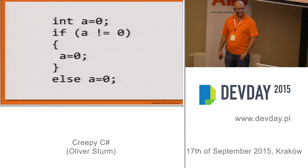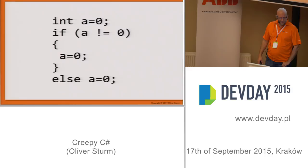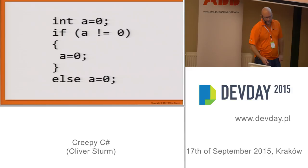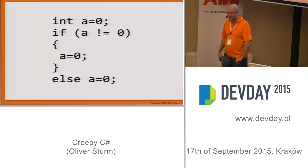Here's an example that defies expectations: we assign variable 'a' to zero, then if 'a' is not zero we set it to zero — otherwise we still set it to zero. So presumably after this code 'a' is zero. What the programmer was thinking I don't know — paid by the line, I expect.